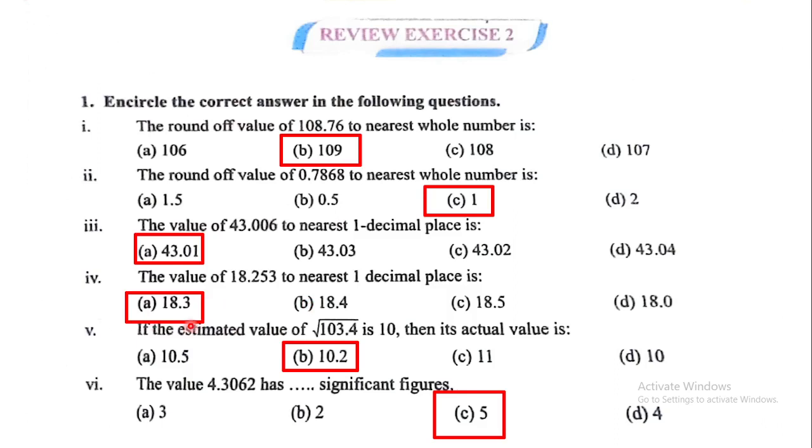18.3. If the estimated value of square root of 103.4 is 10, then its actual value is 10.2. The value 4.3062 has five significant figures.